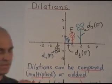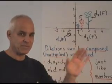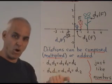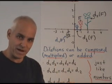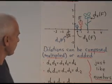So the dilate of this flower by minus one is this upside-down flower that you see over here. Now there's a beautiful thing about dilations that connects dilations intimately to numbers. And that is, that dilations can be composed, which turns out to be just like multiplying them, and they can be added.